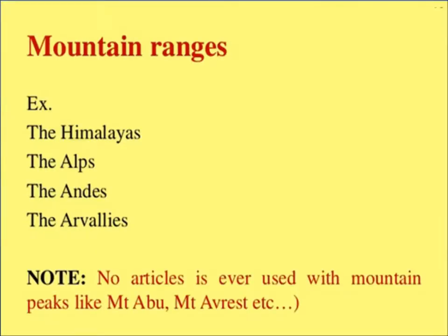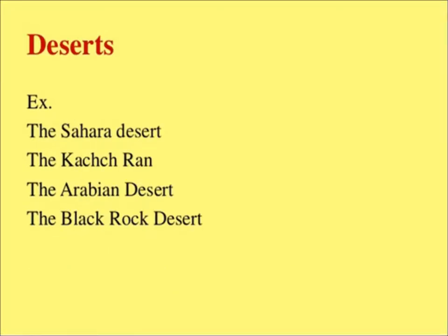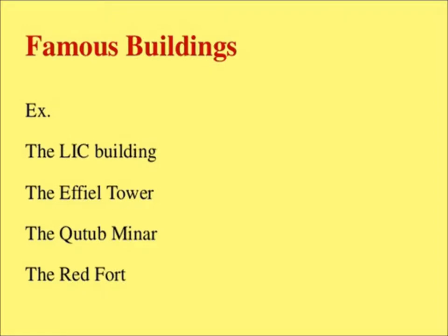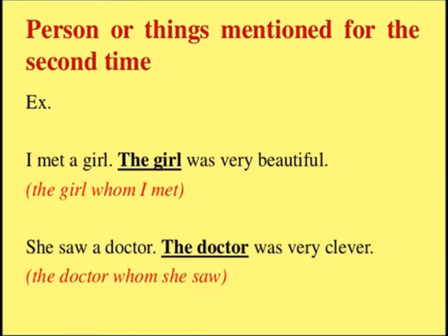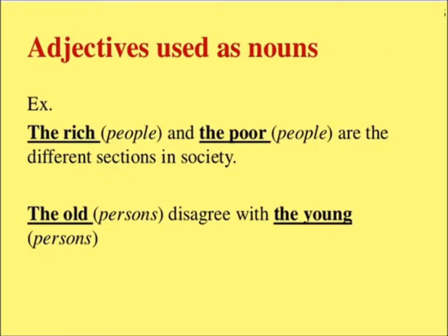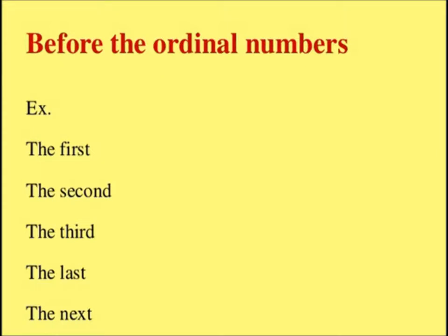The Geeta — जो Hindu की किताब है। Mountain regions से पहले 'the' — the Himalayas, the Andes — लेकिन अगर mount का नाम लिखा जाएगा तो 'the' नहीं लगेगा। Deserts के नाम से पहले 'the' article आएगा। Famous buildings से पहले 'the' — the Qutab Minar। Second time — जब किसी sentence में कोई नाम दूसरी बार use हो।